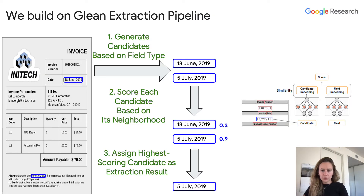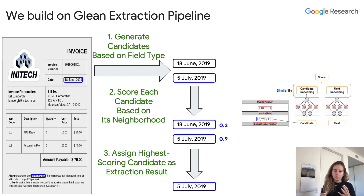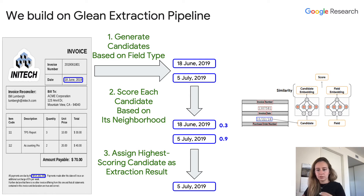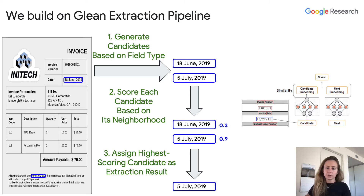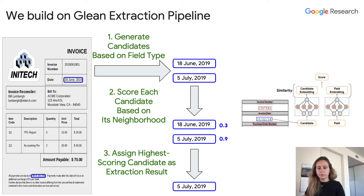We build on the GLEAN extraction pipeline, which decouples the task into three stages. Given a document image and a target schema, OCR is performed on the document image. Candidates are generated using candidate generators that leverage existing domain knowledge of working with structured documents. The generated candidates are scored using a representation learning-based ML model, and the best candidates for the target fields are assigned as the final extraction result.